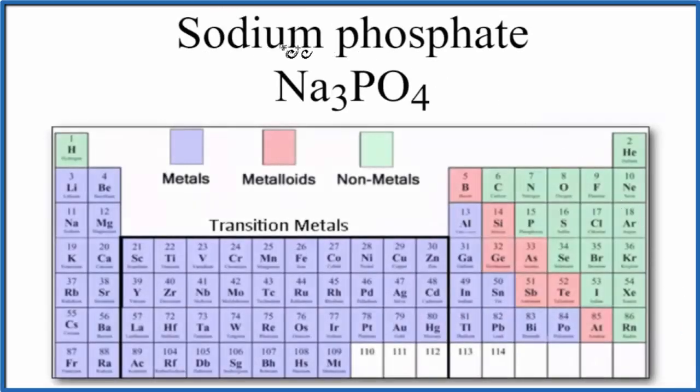In this video, we'll look at whether sodium phosphate, Na3PO4, is ionic or covalent. On the periodic table, we find sodium right here. Sodium is a metal, so we have a metal. We have three sodium atoms, each one a metal.